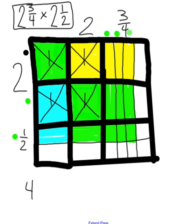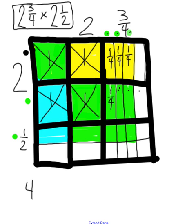Looking at the three yellow pieces: what fraction does each represent of the whole? Since there are four total pieces in that box, each yellow piece represents one-fourth. Underneath, three pieces are shaded out of four total, so each of those green pieces also represents one-fourth.